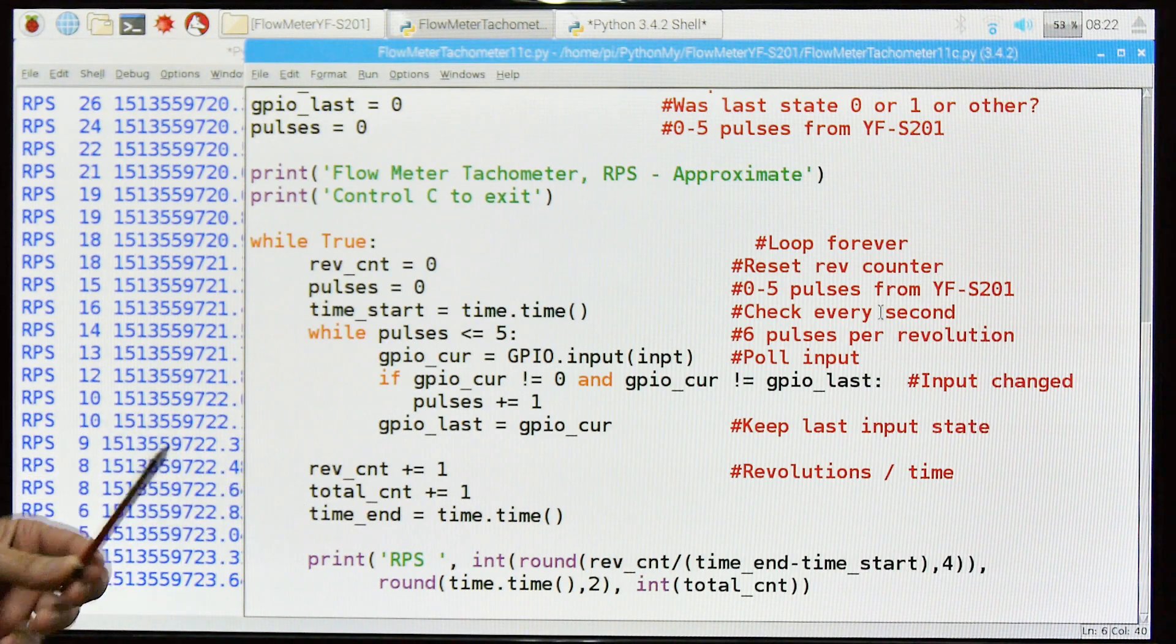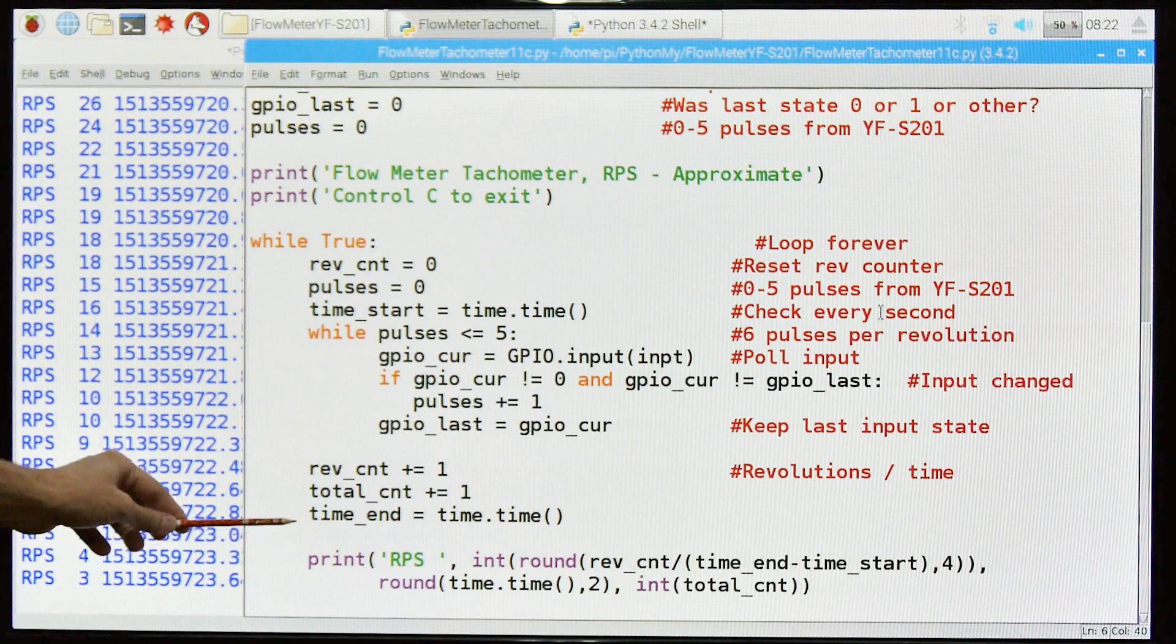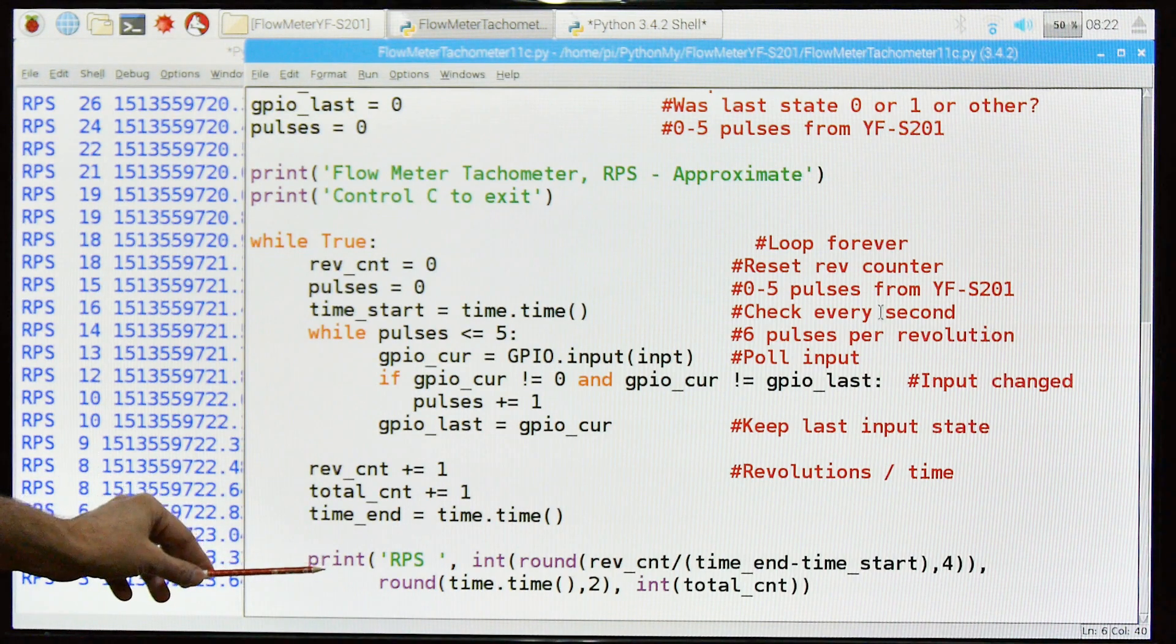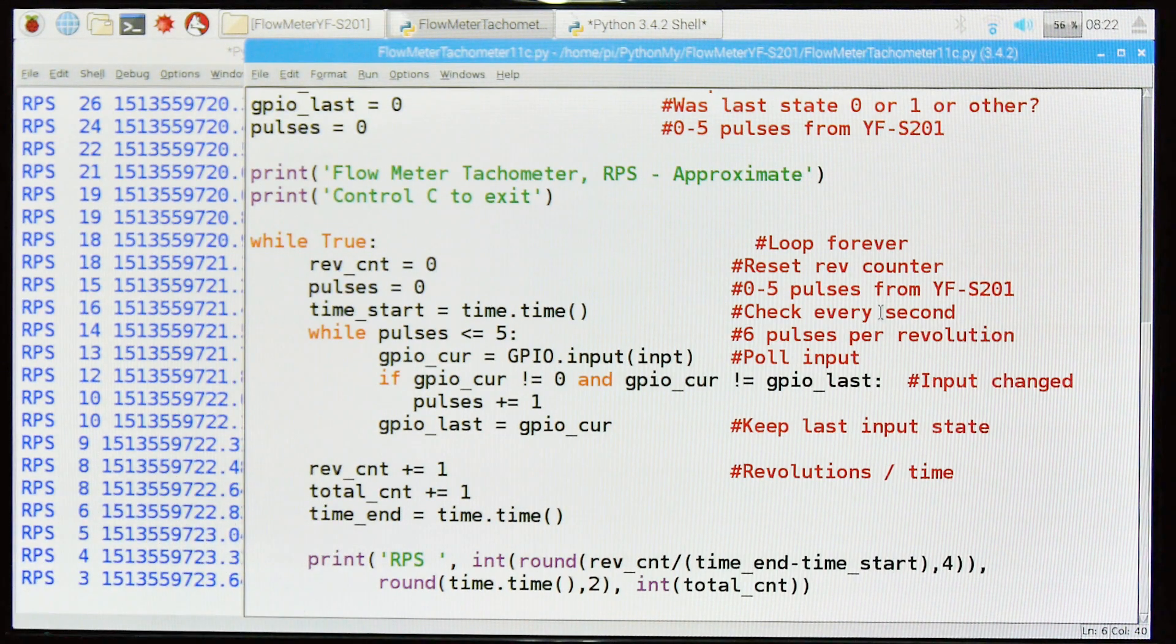I'm keeping the total number of revolutions just for fun, no particular reason. Then we're going to keep the last time so we'll know how much time elapsed between revolutions. Then we're going to print out one line that tells us the information. I've got a lot more information than you need for a real tachometer, but okay. And that's the end of the code.